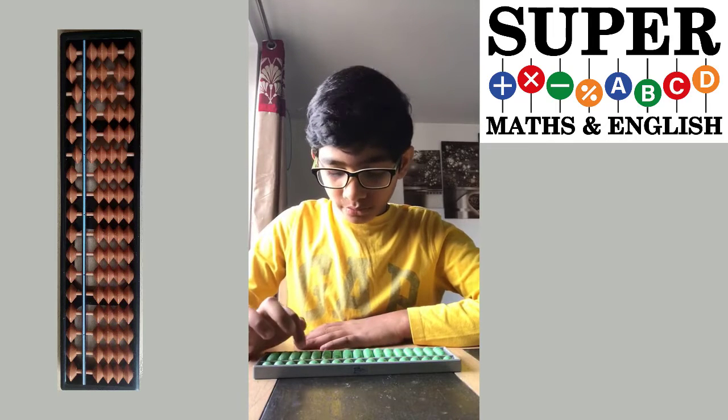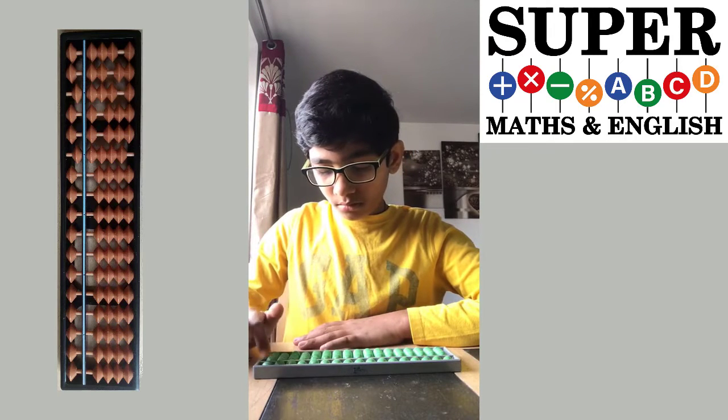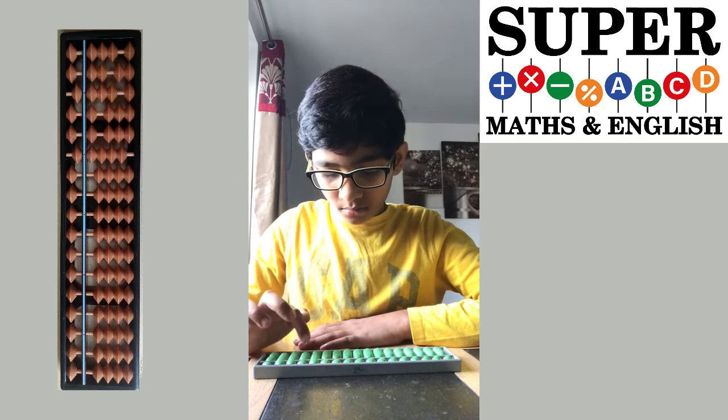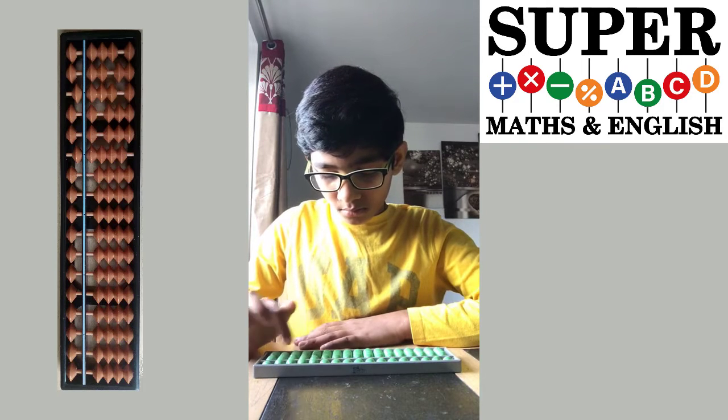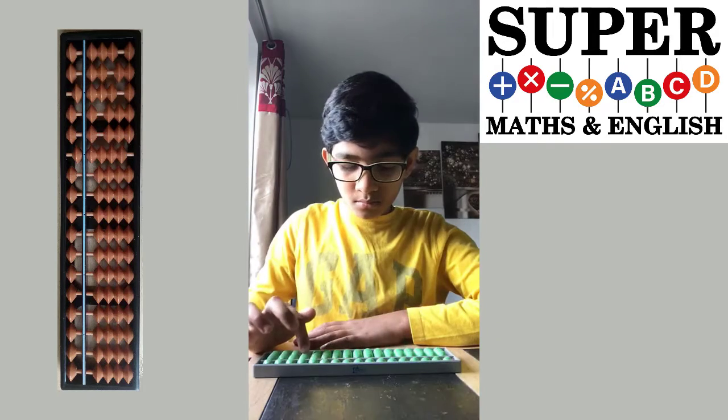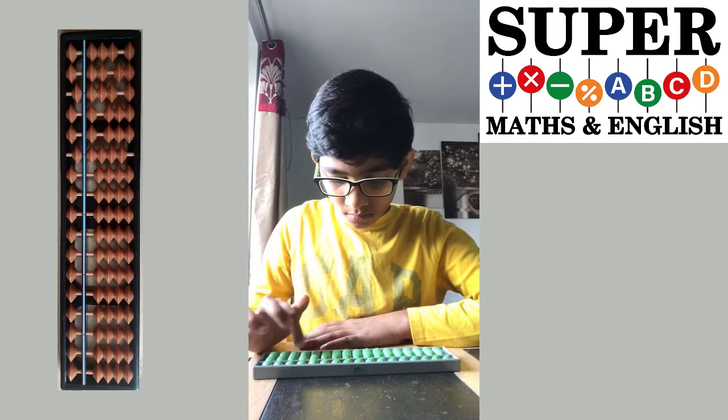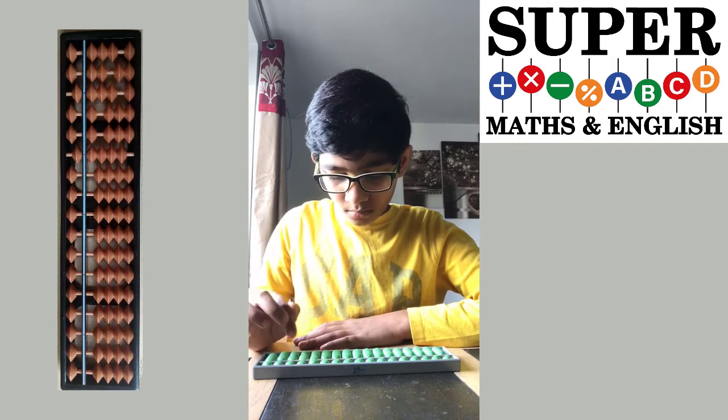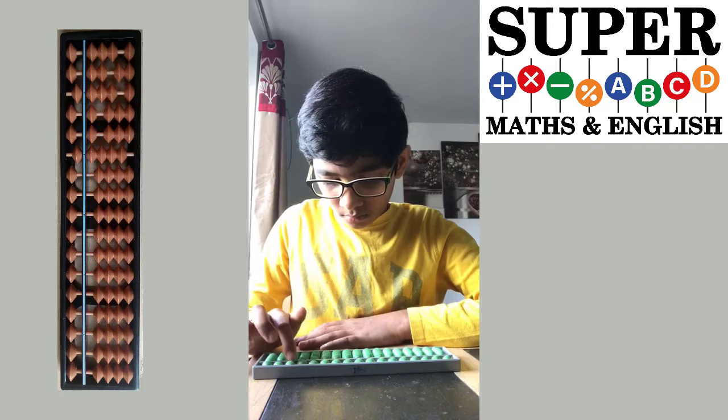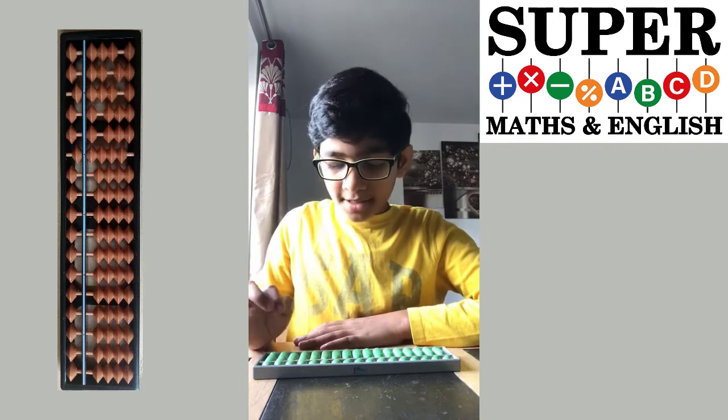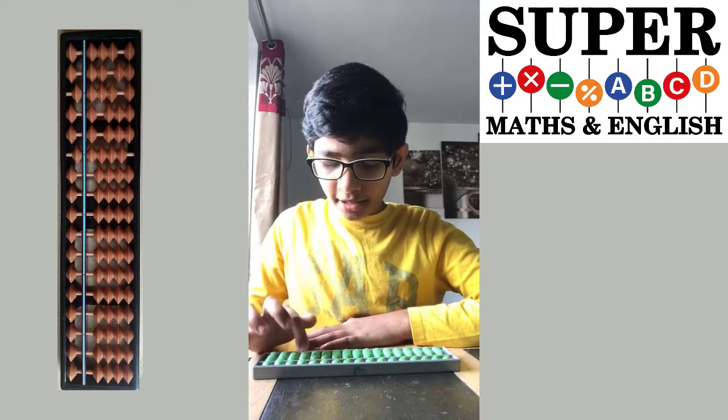Next one. 64,892 plus 2,863 plus 1,472 plus 3,982 minus 56,741. Answer: 16,468.